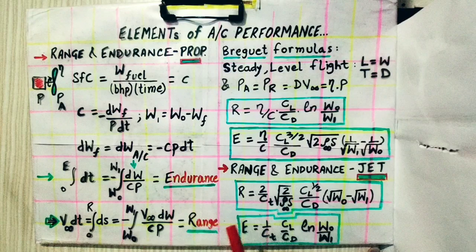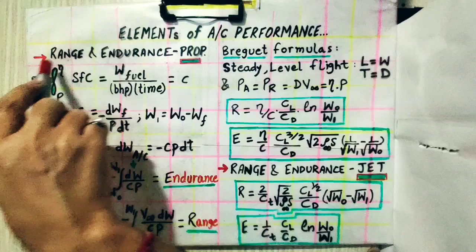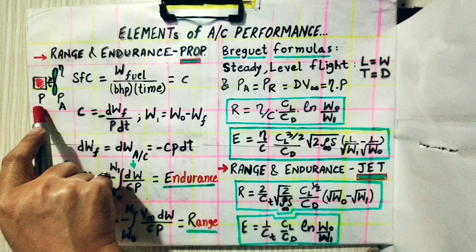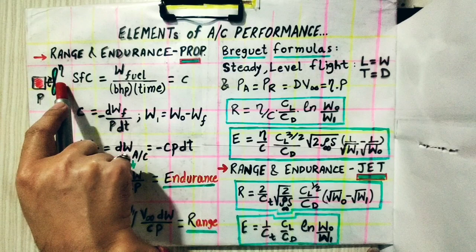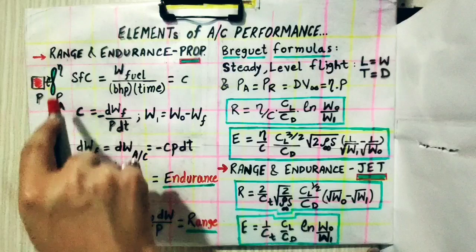Here we have range and endurance for a propeller airplane. As you can see, the engine is a piston engine specifically — not a turboprop or turboshaft engine. The shaft rotates the propeller, and the power produced in the engine is the brake horsepower P. The power available at the propeller end depends upon the efficiency of the propeller and the amount of thrust it can generate.